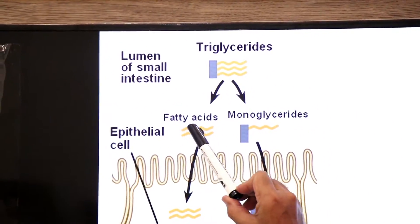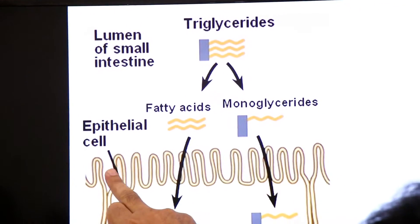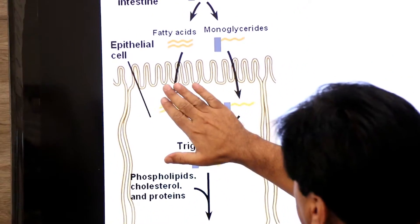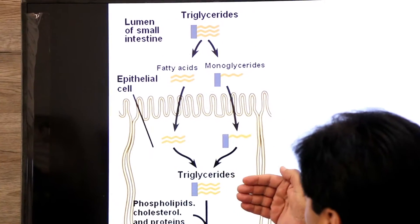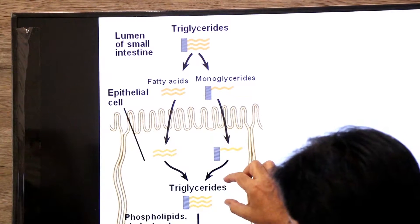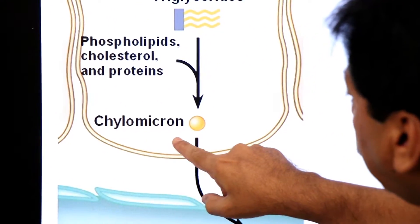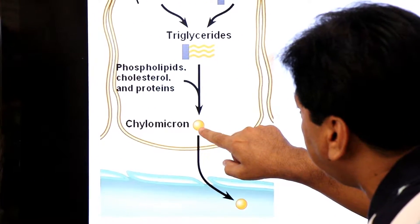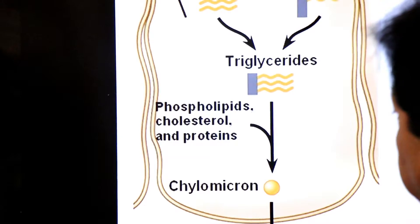In the lumen of the intestine, fatty acids and monoglycerides are present. They are absorbed by the enterocytes — the epithelial cells. Inside the enterocytes, fatty acids and monoglycerides are recombined into triglycerides, which then form fat globules. These fat globules are called chylomicrons.